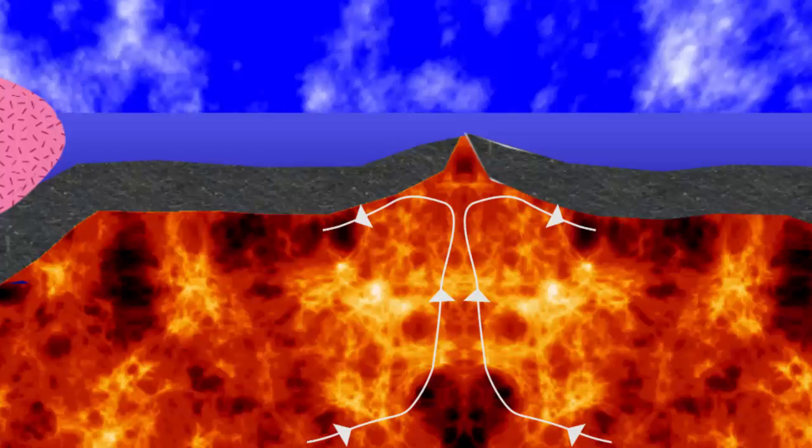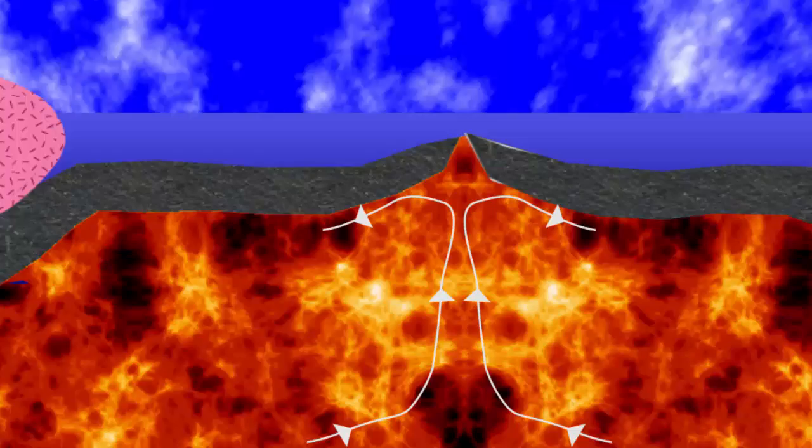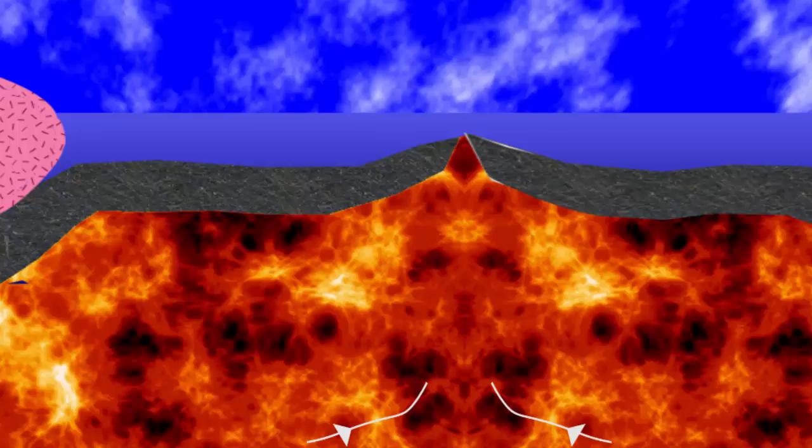This is where mid-ocean ridges form, producing the mafic magma to make basaltic injections and volcanoes in and on the crust. The divergent motion of the convection cells below the ridges is an obvious explanation for seafloor spreading.